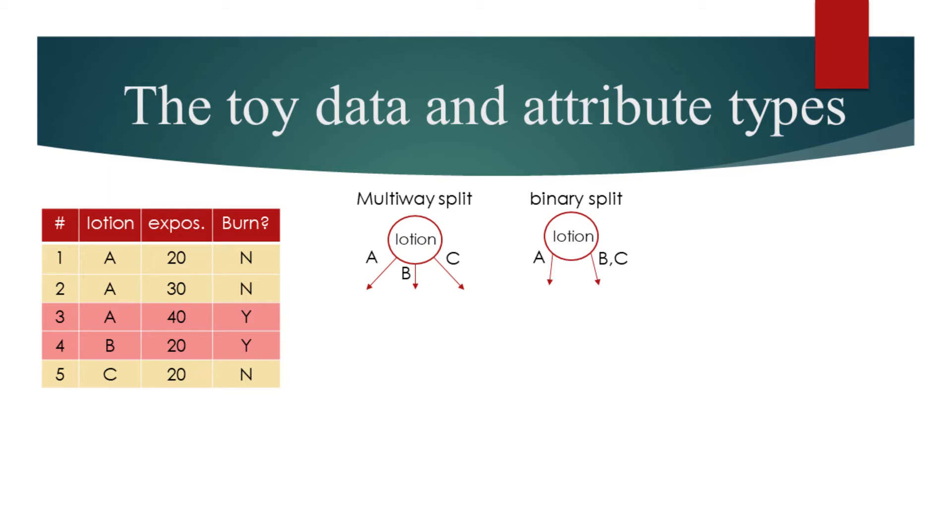Exposure to sun in minutes is a continuous attribute. We can have a comparison test resulting in a binary split, or we can have range queries resulting in a multi-way split.